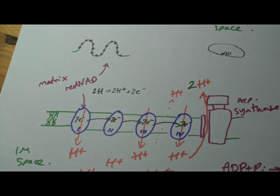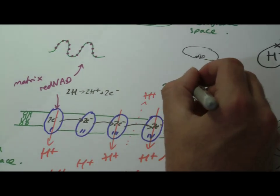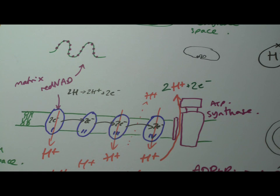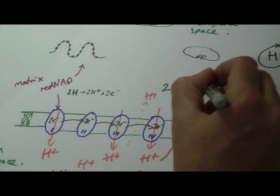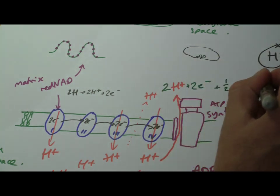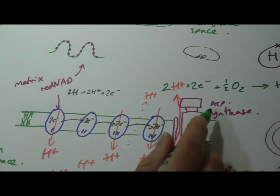What does happen though is, you get two of those hydrogens through, you add onto them two electrons, and we add onto it. Now, again, this sometimes confuses people. I put half O2.